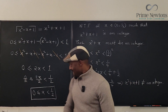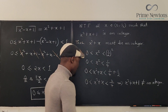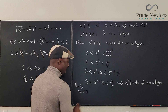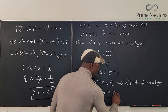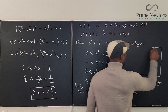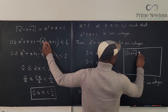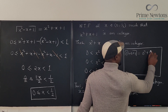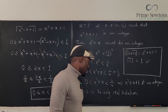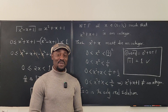Since x cannot be any value other than 0, x = 0 is the only solution. We can verify: the ceiling of (0² + 0 + 1) = ceiling of 1 = 1, and the right-hand side is 0² - 0 + 1 = 1. So ceiling of 1 equals 1, which is true. Therefore x = 0 is the only real solution. Never stop learning — those who stop learning stop living. Bye-bye!